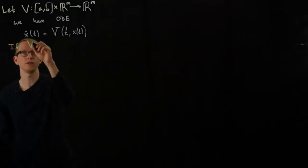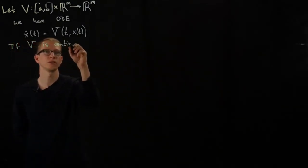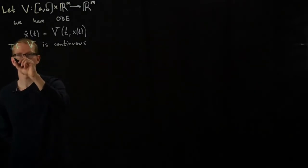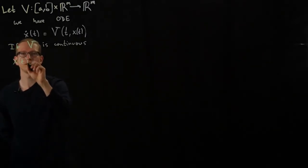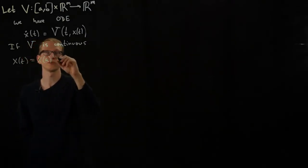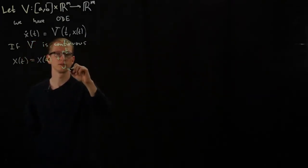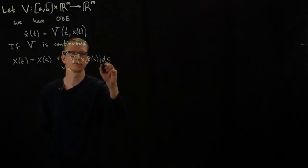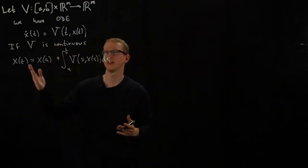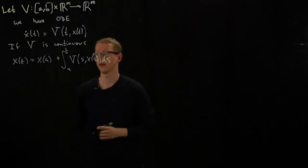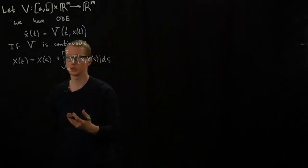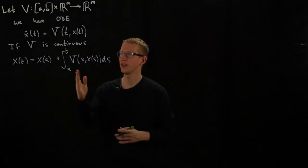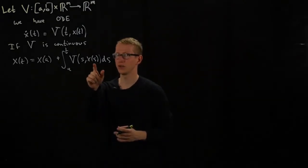If V is continuous, then we can equivalently describe this ordinary differential equation with an integral equation. You can check by the assumptions that if I take the derivative of this, then I'm going to get exactly this equation back with the initial condition x_A. So we described this earlier when V is a family of linear transformations.